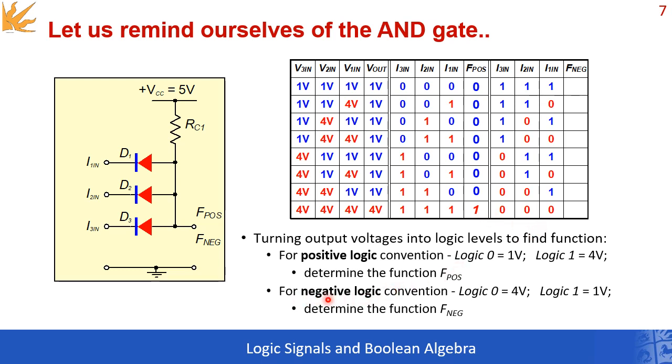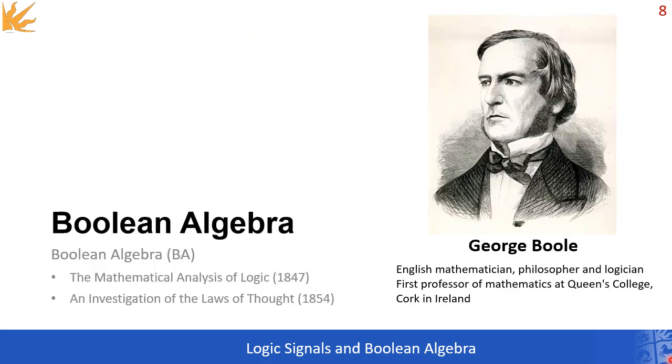If we were using a negative logic convention, things would be the other way around. You'd have a one only when all inputs were one volt, and for any other combination it would be zeros. So enough about diodes. It was only to refresh our memory with an AND gate example. The main topic of today's lecture is Boolean algebra. Diodes will concern us in a later lecture.